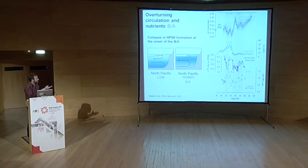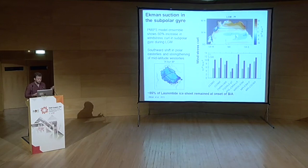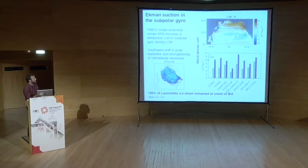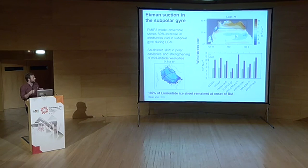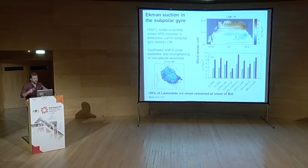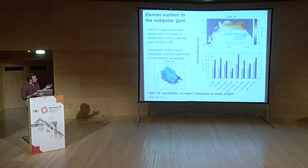PMIP3 model ensemble shows a pronounced increase in wind stress curl within the North Pacific subpolar gyre during the LGM, driven by the Laurentide ice sheet deflecting the jetstream southward — enhancing Ekman suction. During the LGM with enhanced overturning, this pulled up nutrient-poor waters. During the Bølling-Allerød, almost all of the Laurentide ice sheet remained, maintaining enhanced Ekman suction, but now with nutrient-rich waters just below the subsurface (poorly ventilated modern-style circulation) being brought into the surface ocean.